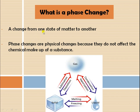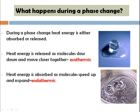The energy that brings about a change in state is known as latent heat. A change from one state of matter to another is a physical change because it does not affect the chemical makeup of the substance. During a phase change, heat energy is either absorbed or released. If heat is absorbed, the process is endothermic; if heat is released, the process is exothermic.